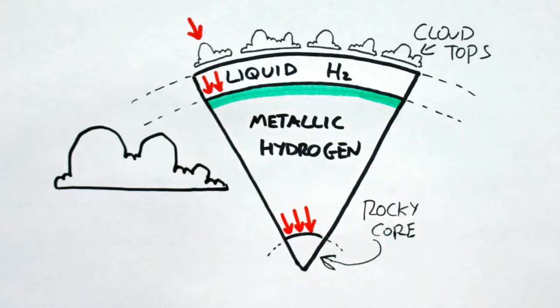Surrounding this metallic hydrogen layer is a region dominated by helium and neon rain. Which is cool, but will pale into insignificance once we look at the internal structure of Uranus and Neptune.